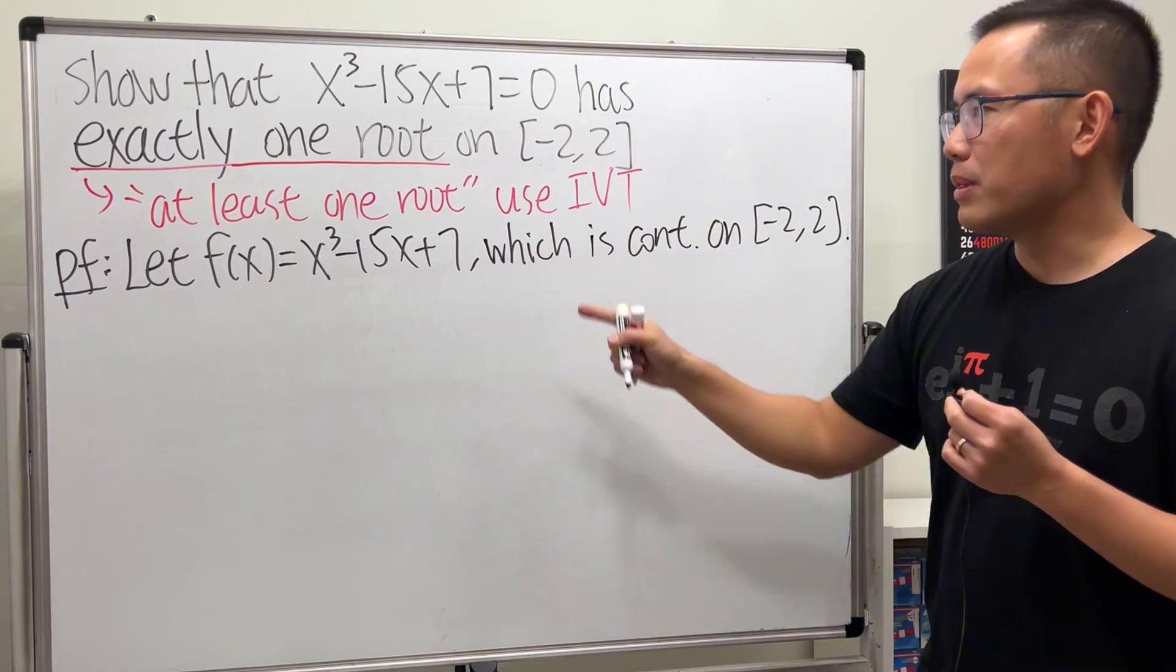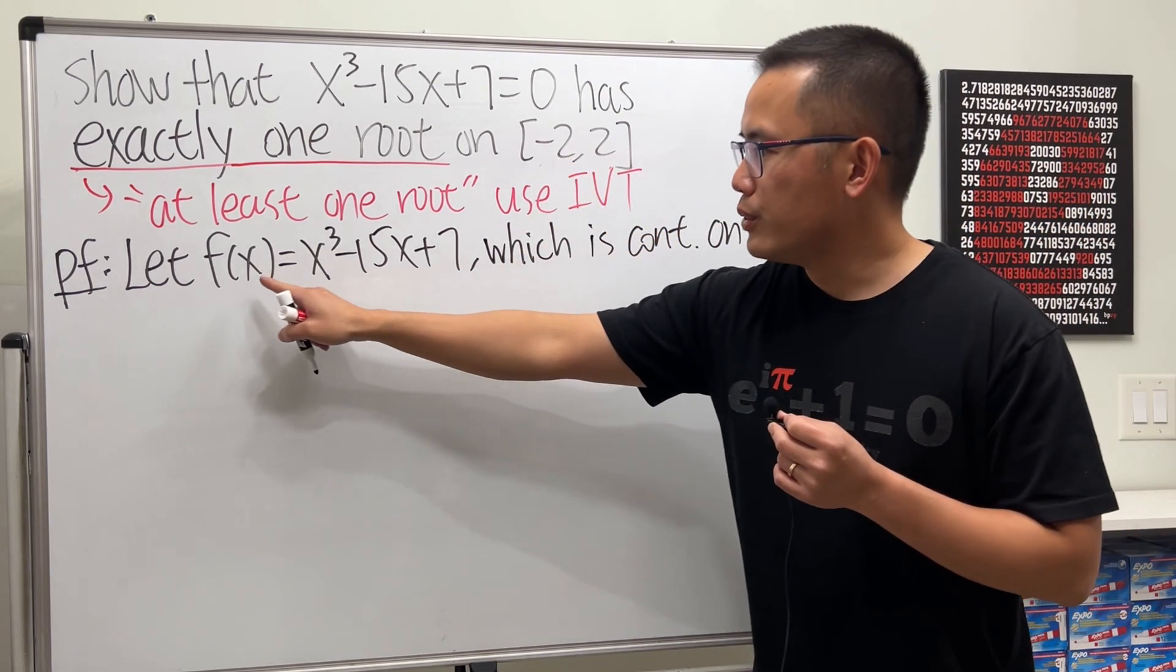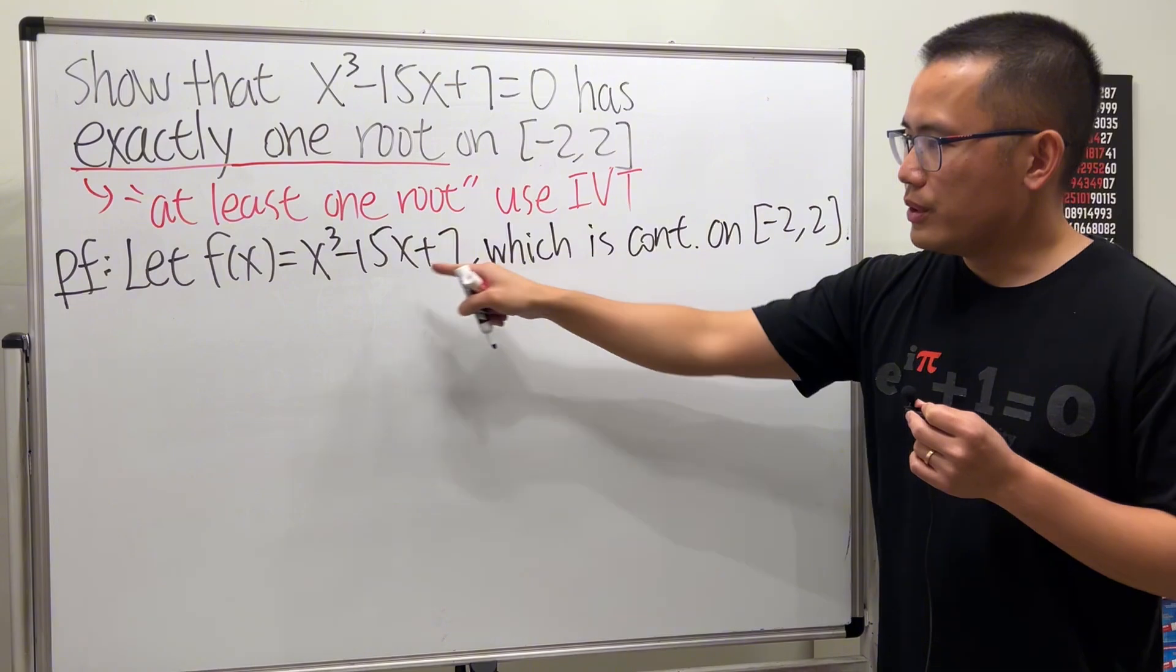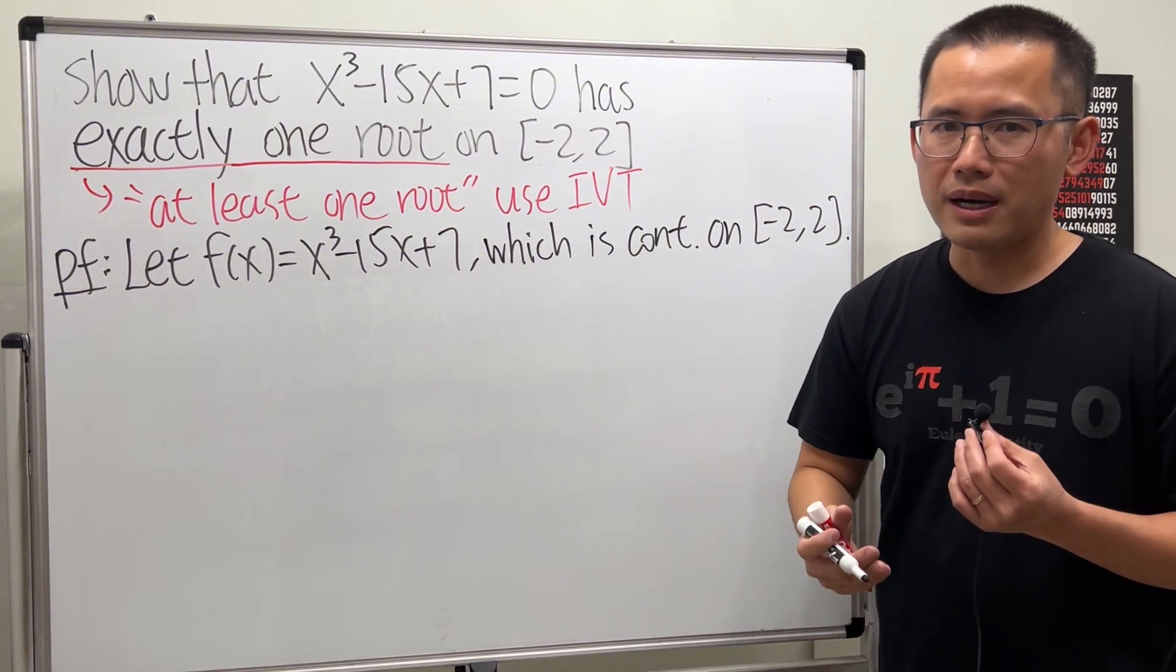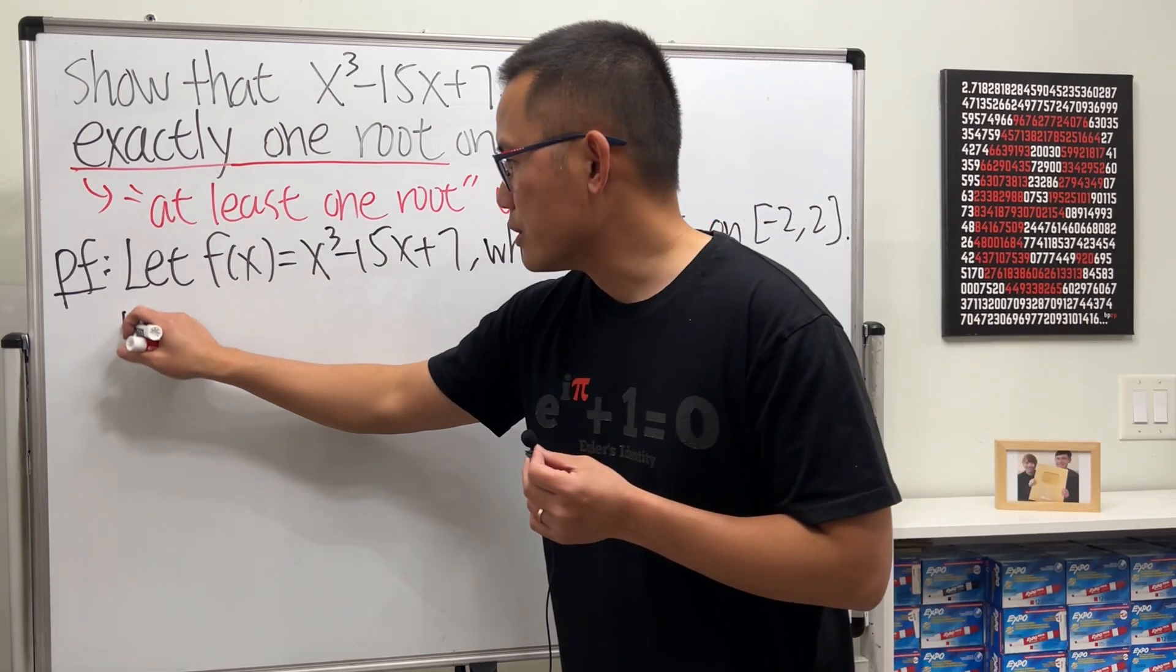Now how this works is we just have to plug in negative 2 into x and then positive 2 into x, and hopefully one output is negative and the other is positive, and it will be done. So I'll just say note that...